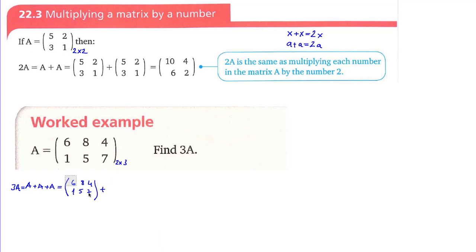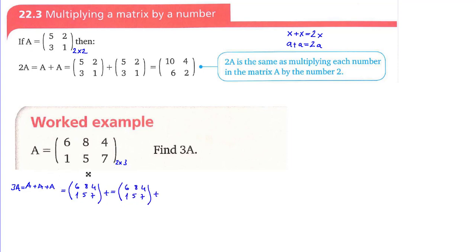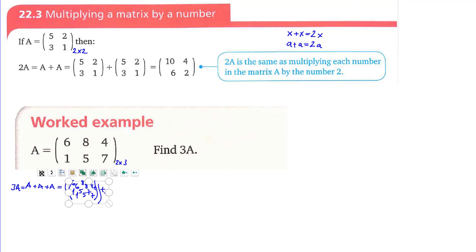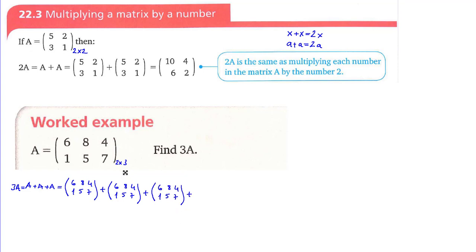I'm going to write the same matrix three times. When I add them — 6 plus 6 plus 6 for the first row first column, 8 plus 8 plus 8 for first row second column, and 4 plus 4 plus 4 for the next entry.